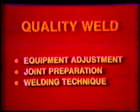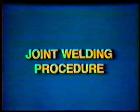A quality weld is produced through proper adjustment of the welding equipment, proper preparation of the joint, and proper utilization of techniques by a skilled welder. The materials, equipment, adjustments, and joint design are normally listed in a joint welding procedure. This joint welding procedure is a document which indicates that quality weld results can be expected if the method for producing the weld is in accordance with the procedure.